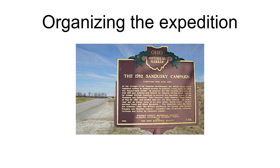On May 20, 1782, the volunteers began gathering at the rendezvous point at Mingo Bottom, present Mingo Junction, Ohio, on the Indian side of the Ohio River. They were mostly young men of Irish and Scots-Irish ancestry, coming primarily from Washington and Westmoreland counties in Pennsylvania. Many were Continental Army veterans. The exact number of men who took part is unknown; an officer wrote to General Irvine on May 24 that there were 480 volunteers, although additional men may have subsequently joined, bringing the total to more than 500.